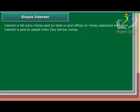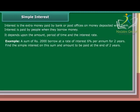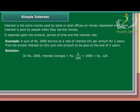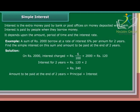Simple Interest: Interest is the extra money paid by banks or post offices on money deposited with them. Interest is also paid by people when they borrow money. It depends upon the amount, period of time, and the interest rate. Example: A sum of Rs. 2,000 borrowed at 6% per annum for 2 years. Interest charged equals Rs. 6 upon 100 into 2,000, which equals Rs. 120 per year. Interest for 2 years equals Rs. 120 into 2, which equals Rs. 240. Amount to be paid equals principal plus interest, which is Rs. 2,000 plus Rs. 240, which equals Rs. 2,240.